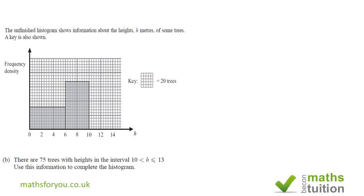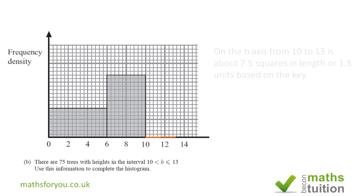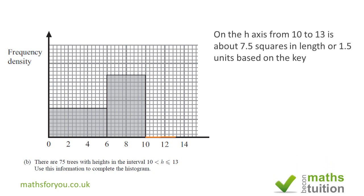Now we want to find how many unit areas are occupied by 75 trees. If we divide 75 by 20, we get 3.75 unit areas occupied by 75 trees. Now on the height axis here, from 10 to 13...